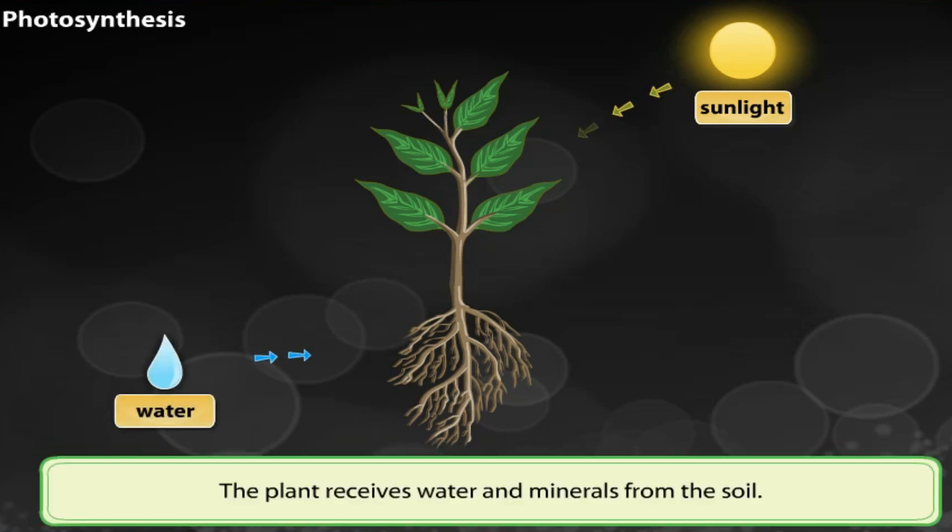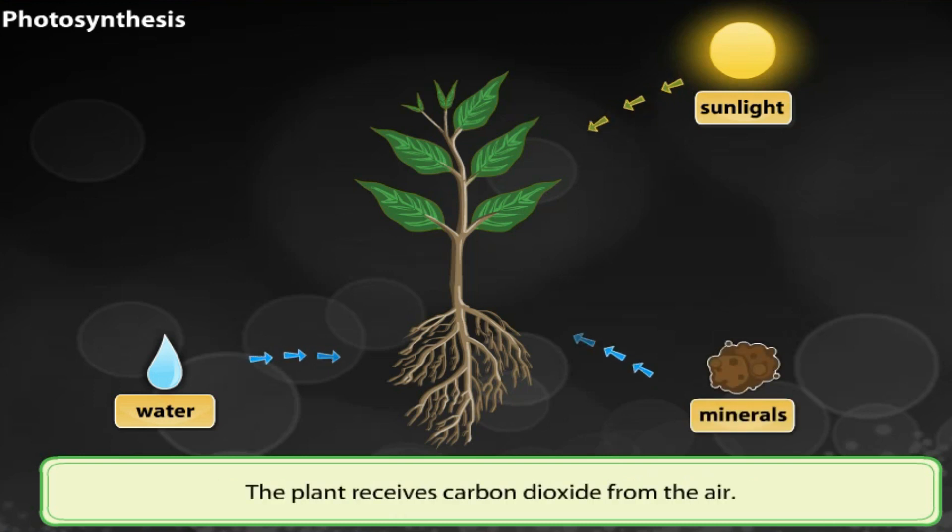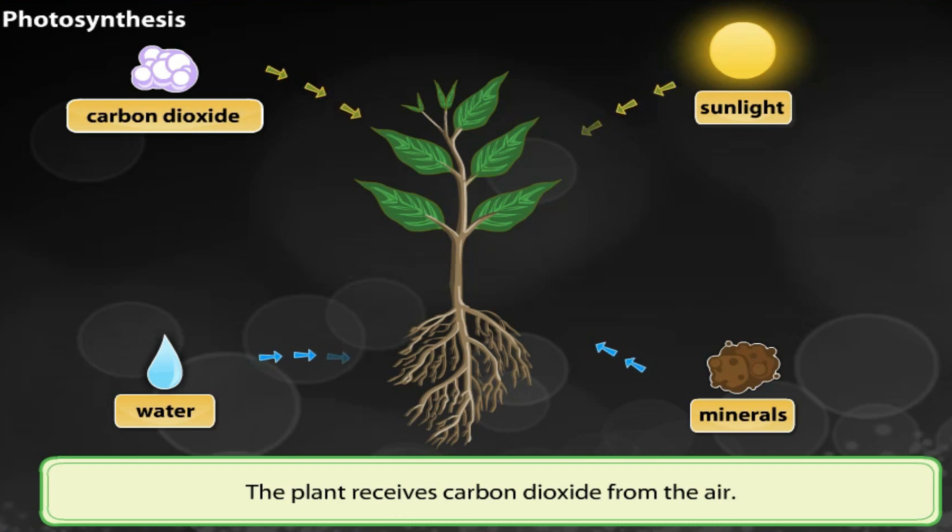The plant receives water and minerals from the soil. The plant receives carbon dioxide from the air.